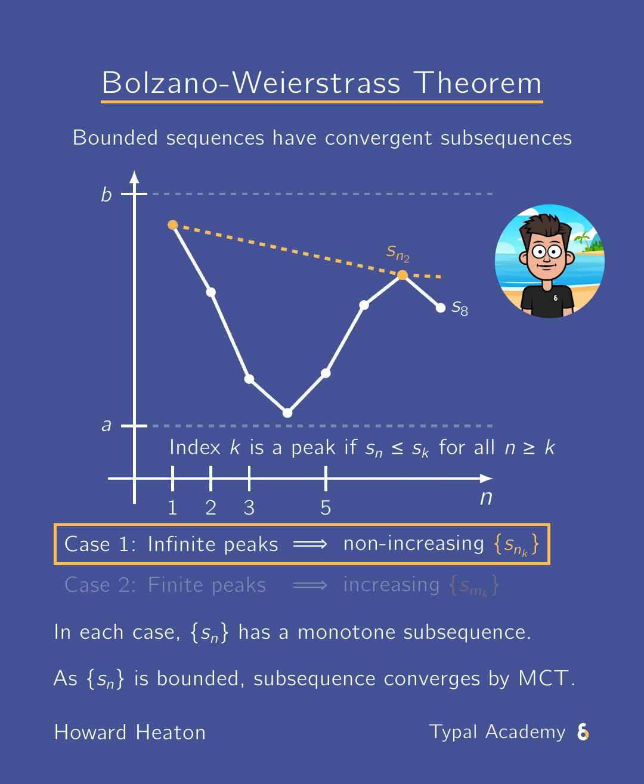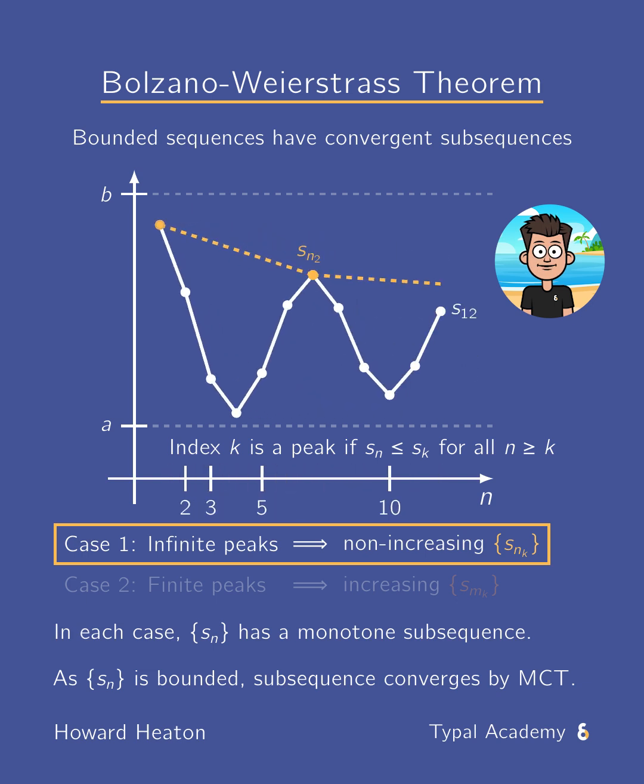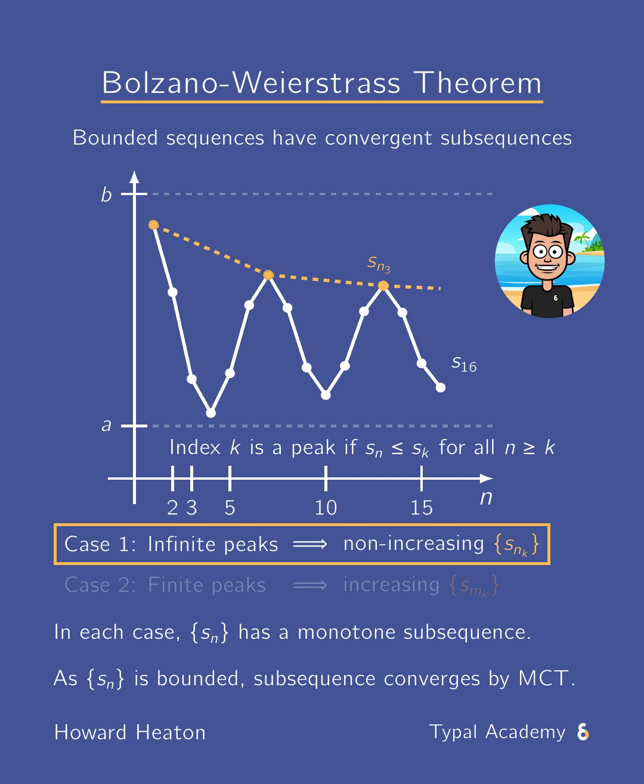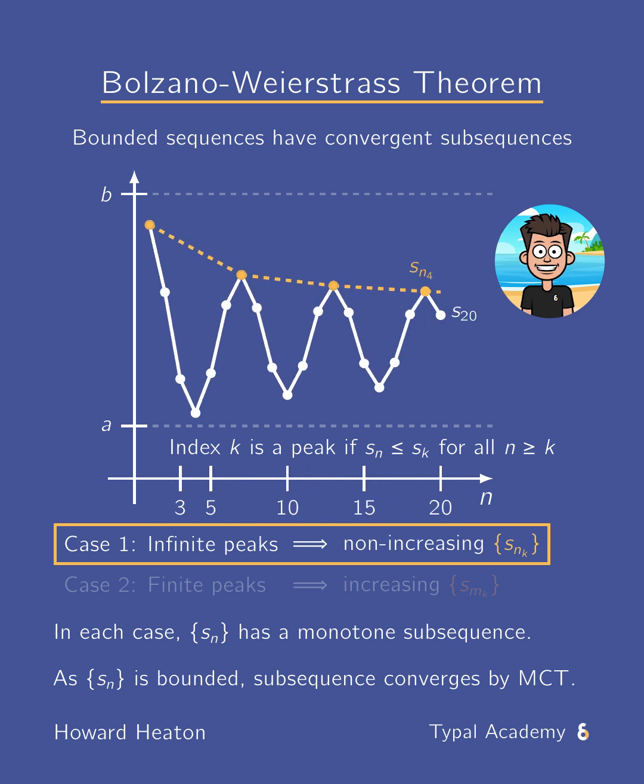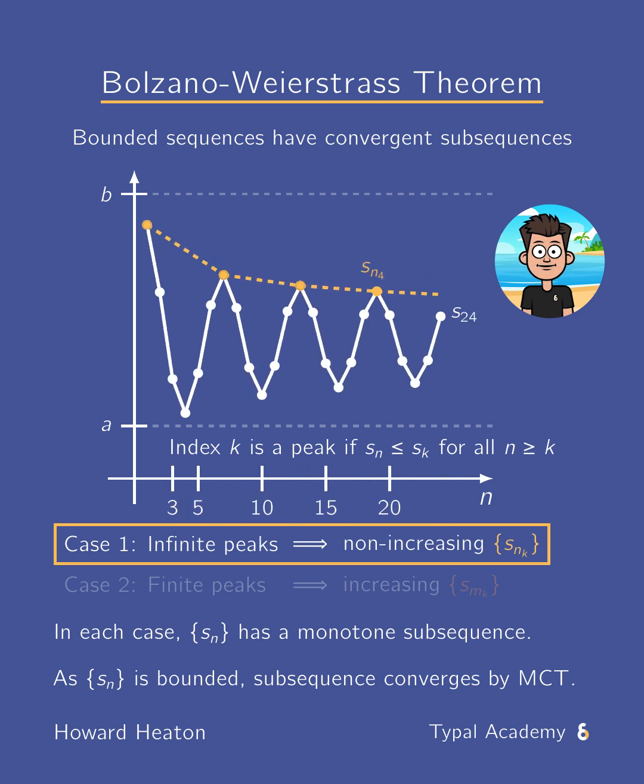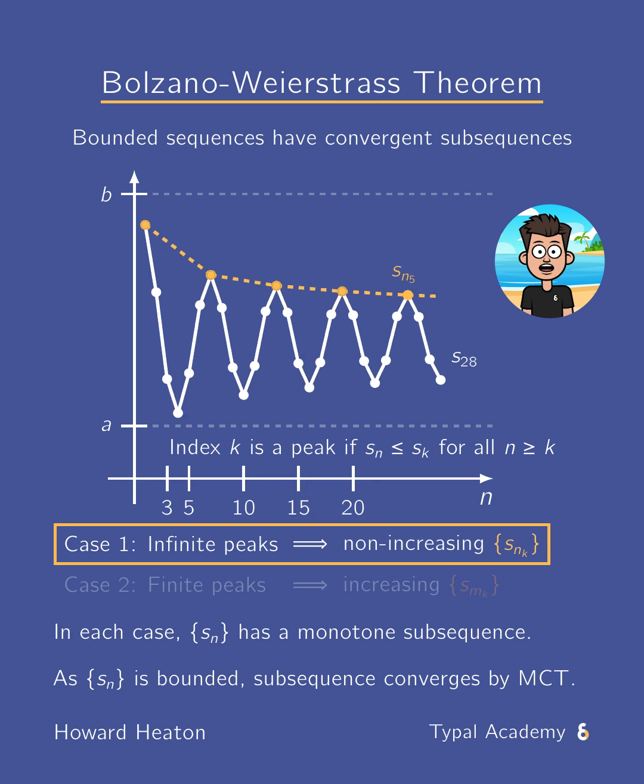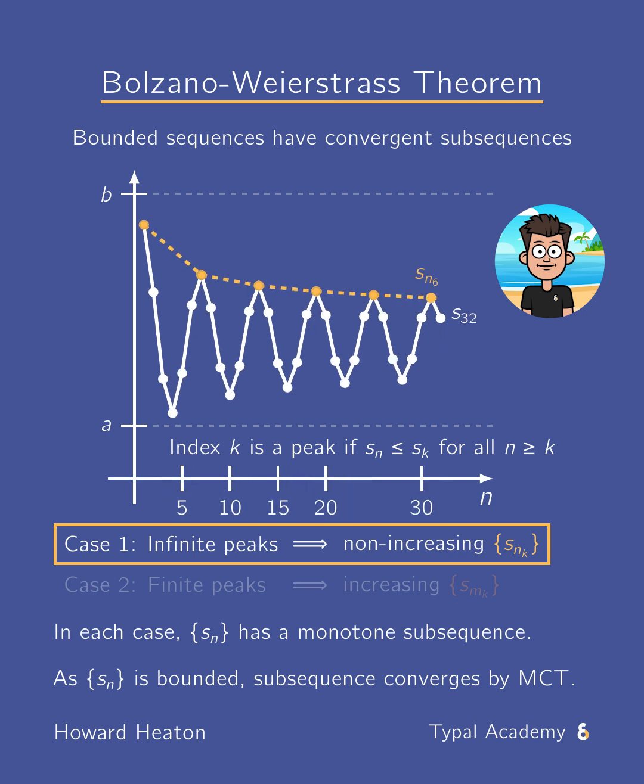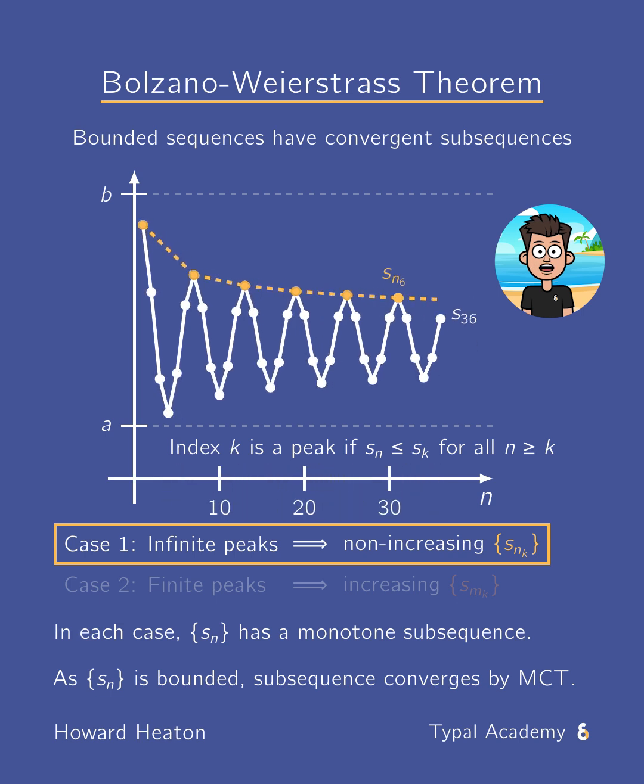Now, for the first case, suppose there is an infinite number of peaks. Here peaks are shown in yellow. As the iteration k increases, we can keep finding new peaks, the yellow dots, which are non-increasing. That is, the yellow sequence is monotone.